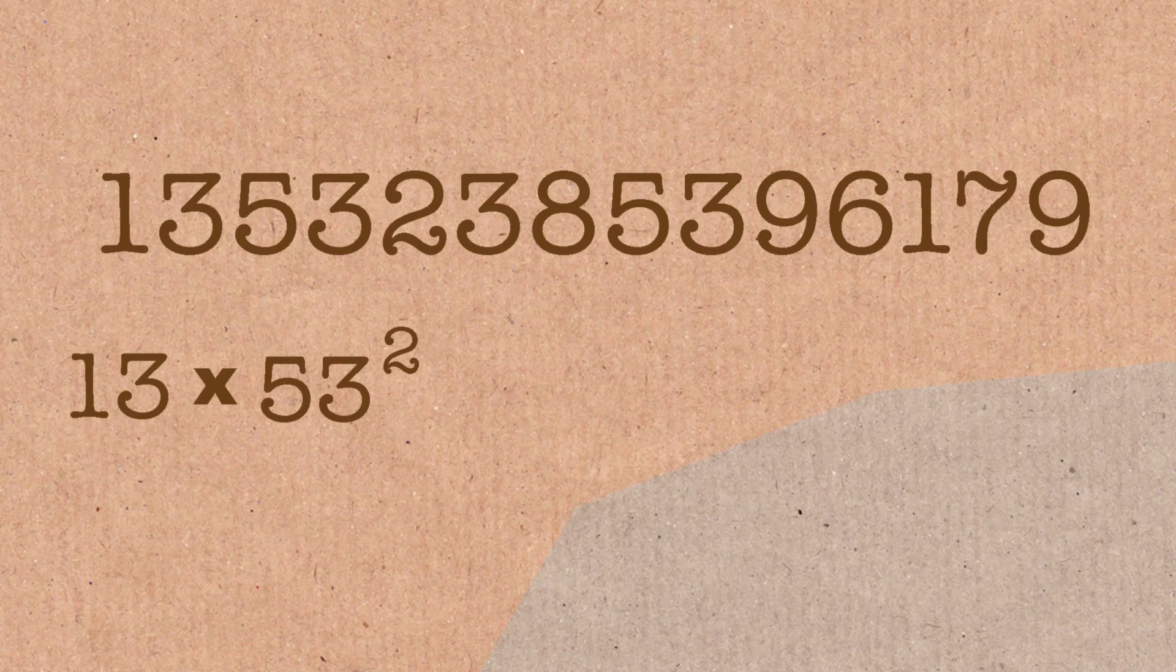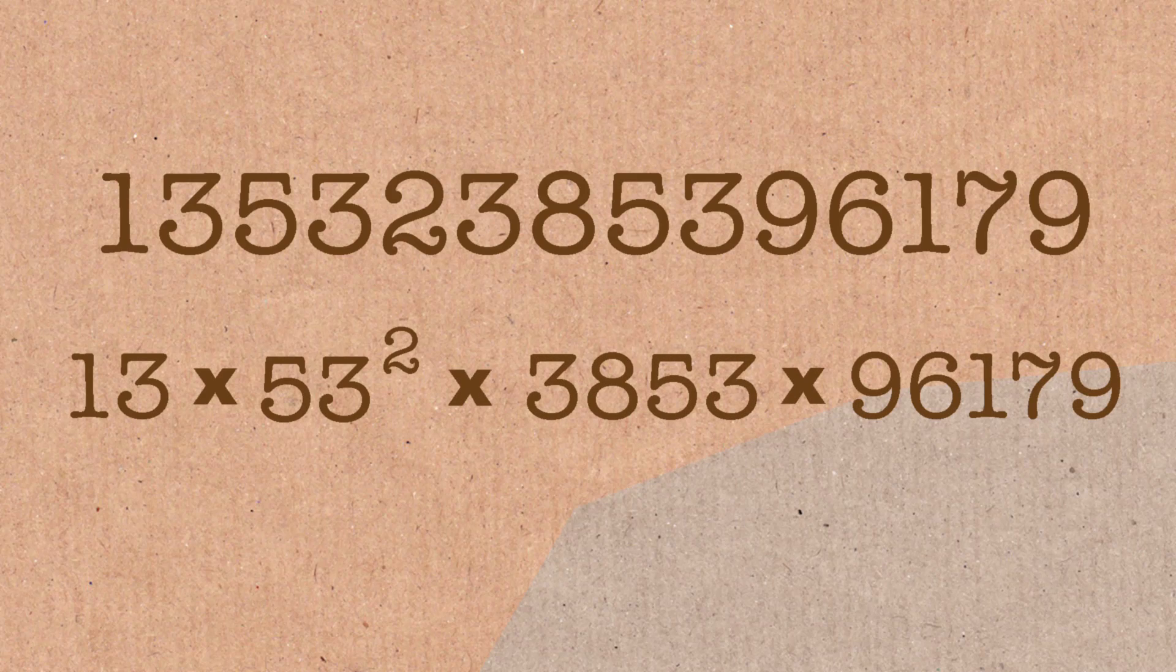Now the funny thing about that is what I've written down there is the prime factorization of this number. So all these are prime numbers. 13 is prime, 53 is prime, 3853 is prime, and 96179 is prime. So this is the prime factorization of this number. And look at how you could have got this number.